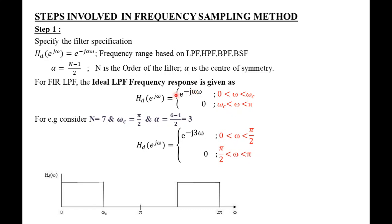The cutoff frequency ωc defines the filter, and since it is a symmetric filter, the response from 0 to π is symmetric from π to 2π. This symmetric feature is exploited in linear phase FIR filter design. Taking an example with filter order N = 7 and cutoff frequency ωc = π/2 gives α = 3. So HD(e^jω) = e^(−j3ω) for ω from 0 to π/2, and the response is 0 from π/2 to π.